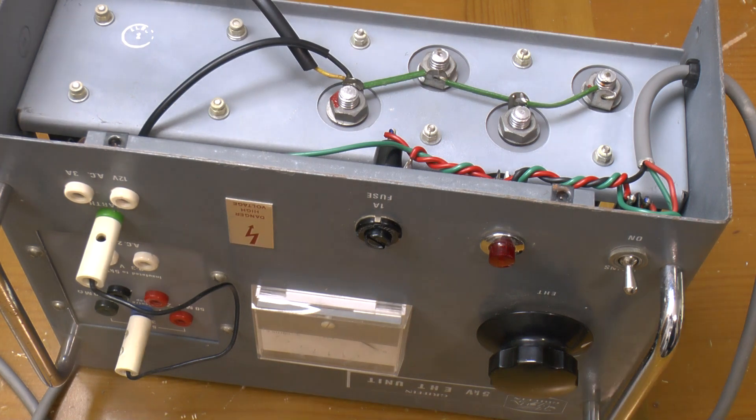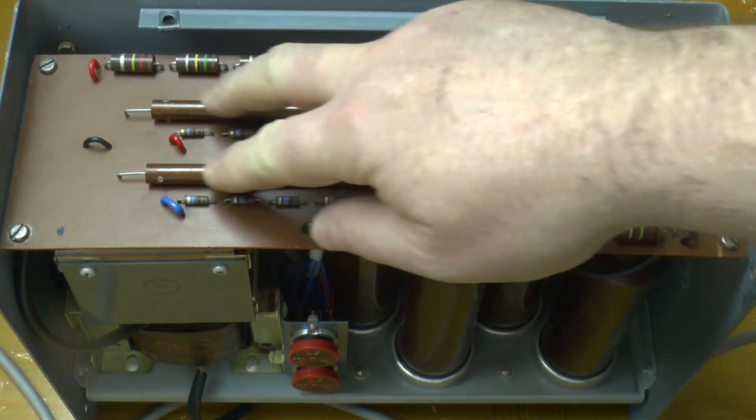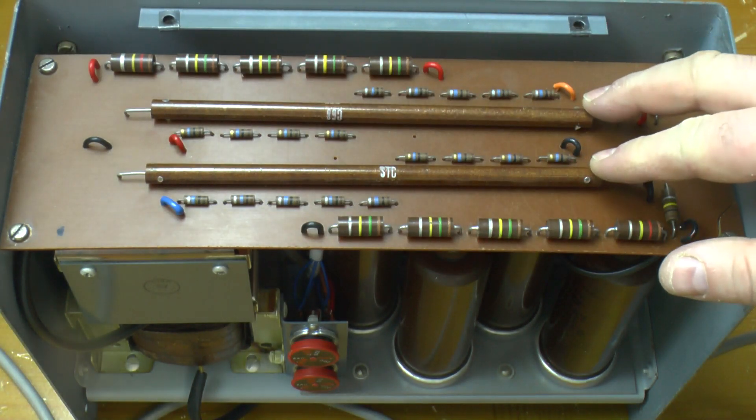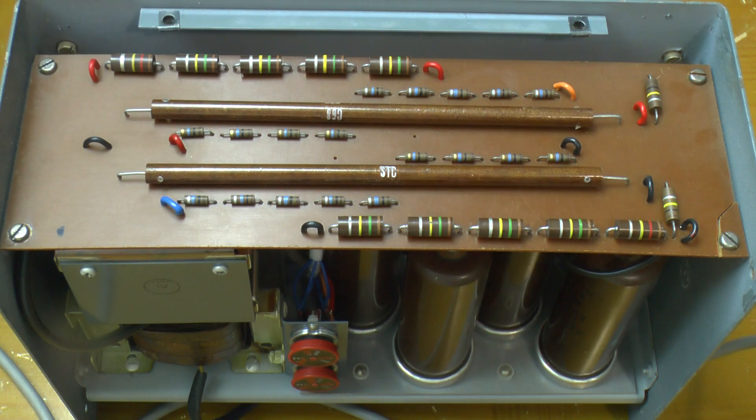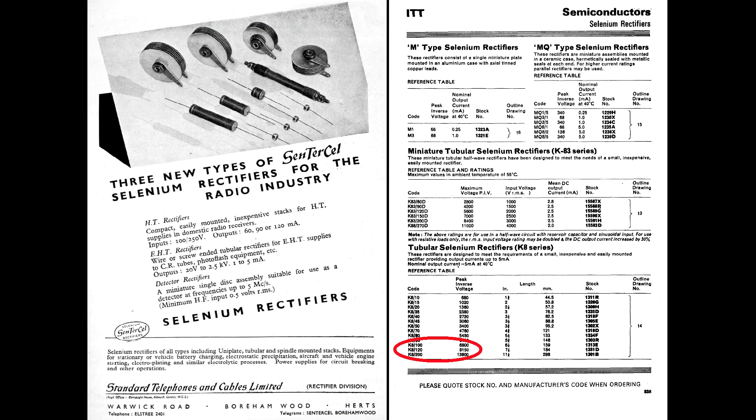What else is in here? Well there's a circuit board with two huge diodes. Again you've got to go digging through the archives to find anything out about these. They're branded STC which was Standard Telephones and Cables. They're part of ITT corporation. Hence this ITT data sheet containing the details. These particular ones are the K8120 rated at 8150 volts at 5 milliamps.